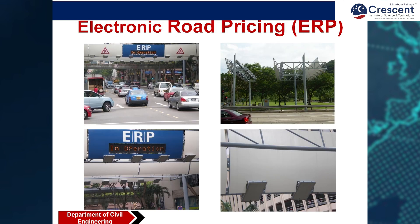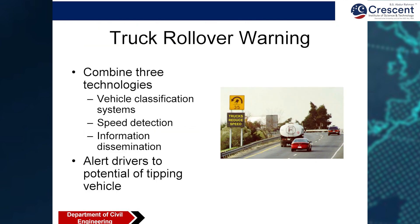Electronic Road Pricing (ERP) is essentially a toll system. Today you have FASTAG — you prepare your FASTAG label and your vehicle can move fast through the toll without stopping. This is called Electronic Road Pricing (ERP). Truck rollover warning combines three technologies: vehicle classification, speed detection, and information dissemination, to alert drivers to the potential of tipping their vehicle.